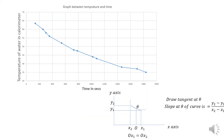After that I have drawn the graph. The graph is between the temperature of the water in the calorimeter on one axis and time in seconds on the other. The graph shows a curve — not a straight line. I have drawn a tangent at a particular point to find the slope. The slope is calculated as Y2 minus Y1 divided by X2 minus X1.